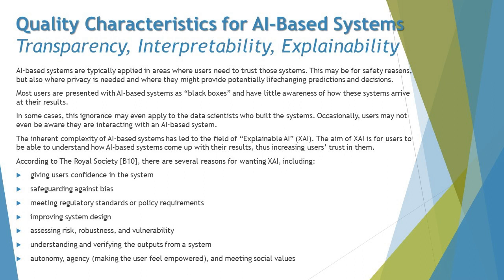Further reasons include verifying the outputs from the system, which should be cross-checked, and ensuring autonomy and agency when meeting social values — meaning AI should not impact any individual's personal emotions, religious thoughts, or other personal aspects. Systems must be very generic and not promote any particular perception or view. Together, these are the many reasons why AI-based systems being built today should be XAI — explainable to users and stakeholders.